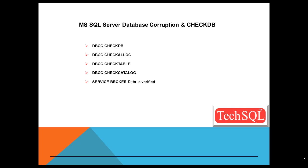DBCC CheckAlloc validates the allocation information maintained in the GAM, SGAM, and IAM pages. It performs a cross-check to verify that every extent that the GAM and SGAM indicates has been allocated really has been allocated, and that any extents not allocated are indicated in the GAM and SGAM as not allocated. It also verifies the IAM chain for each allocation unit, including the consistency of the links between the IAM pages in the chain, and verifies that all extents marked as allocated to the allocation unit really are allocated.